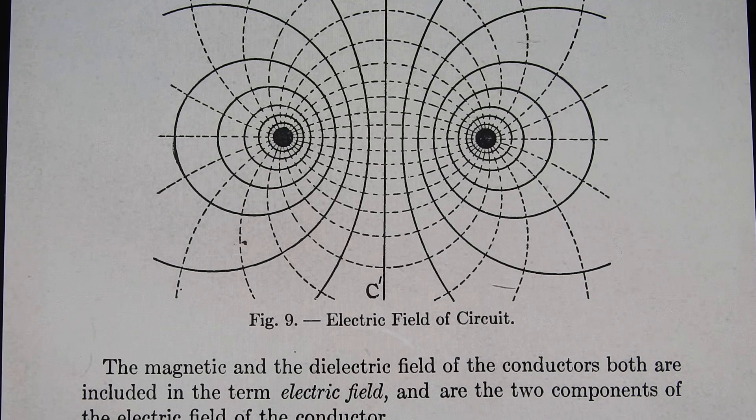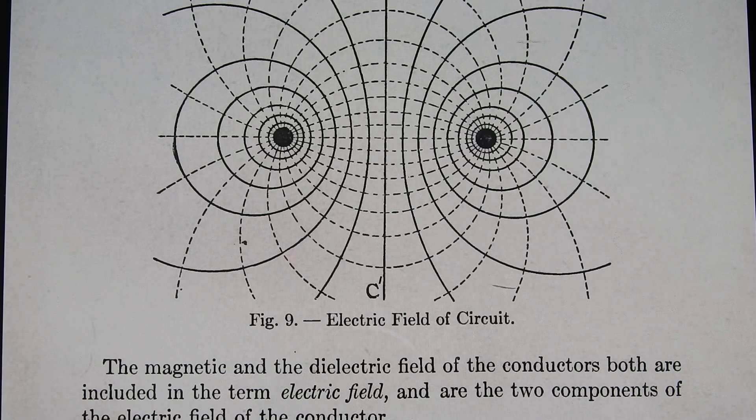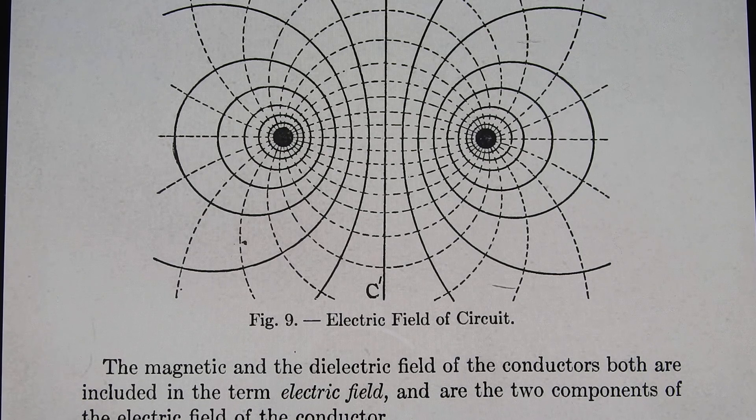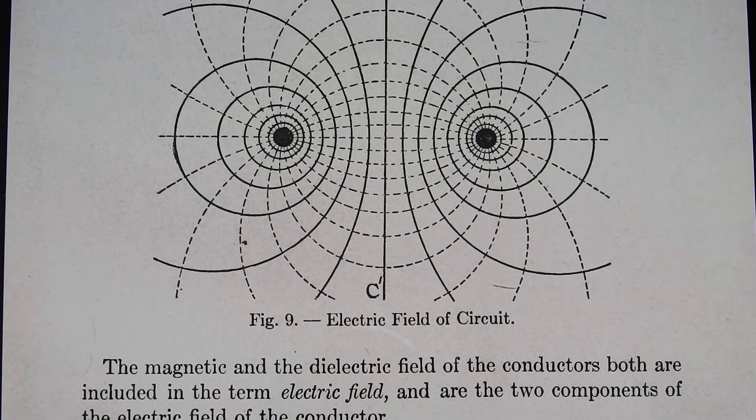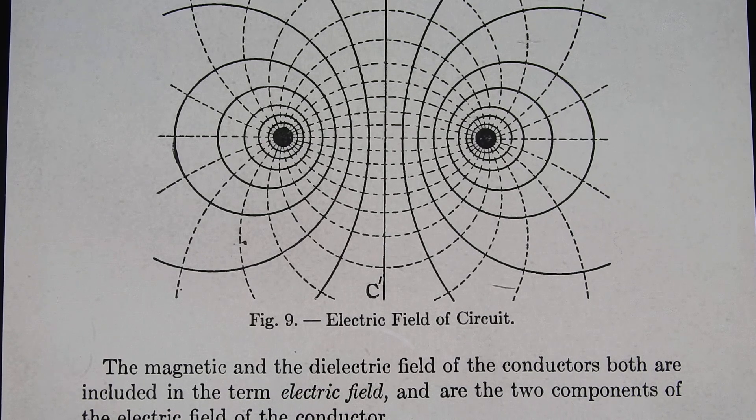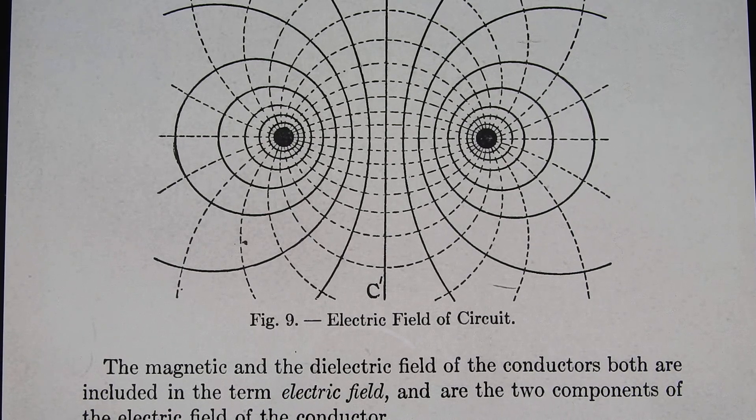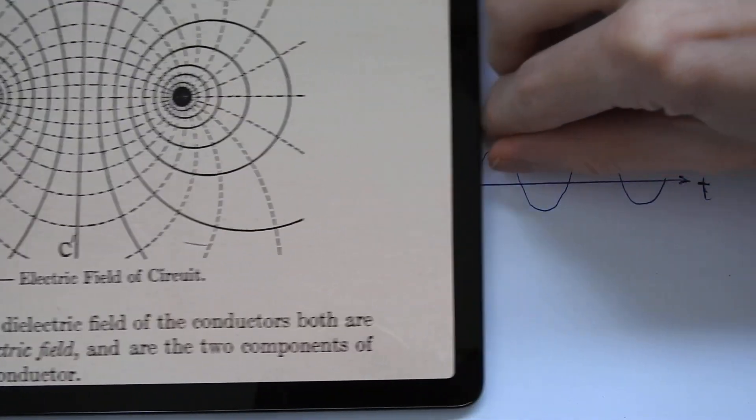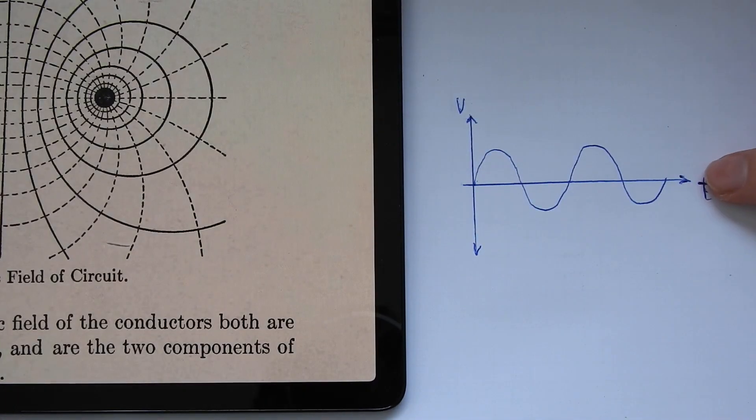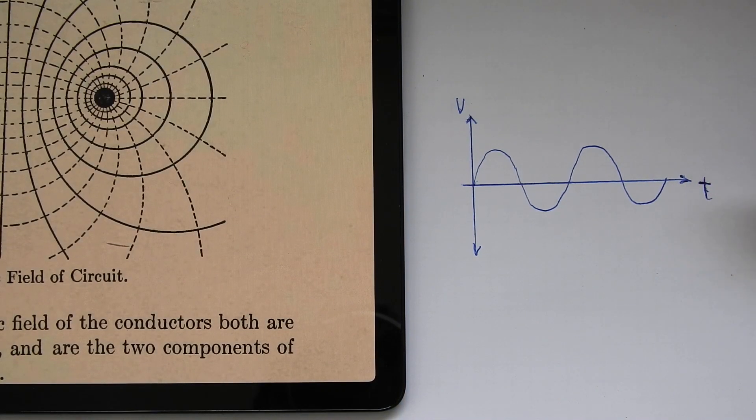So when we talk about electricity or electric signals, I actually mean that something is going on in the electric field. For example, an AC signal that we have drawn out like you would see it on the oscilloscope is actually just a movement in the electric field itself.